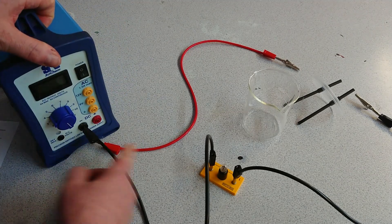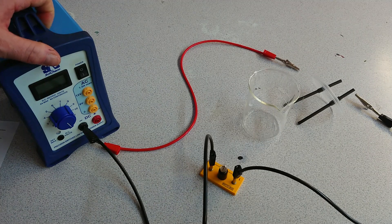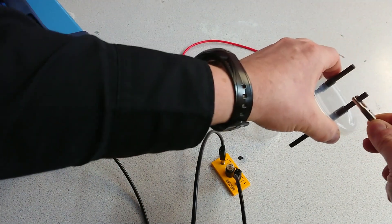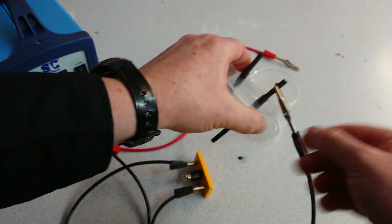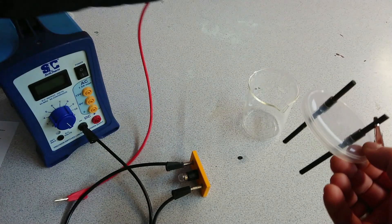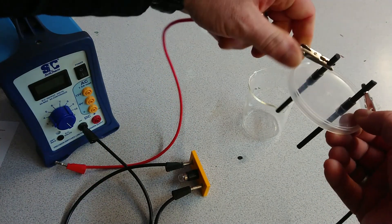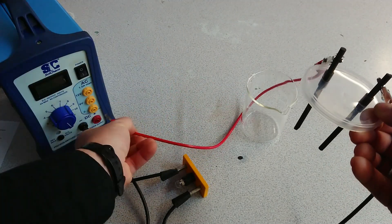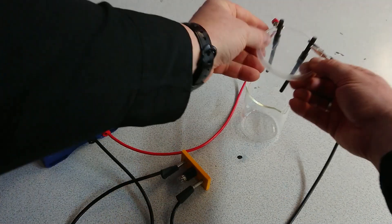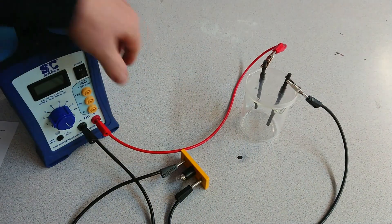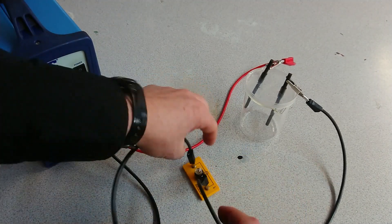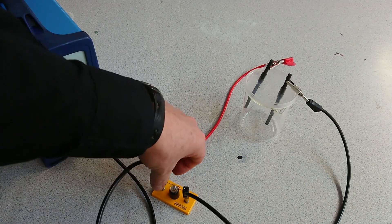And then from the other electrode we return back to the power supply. Now we should see that we have a complete circuit.